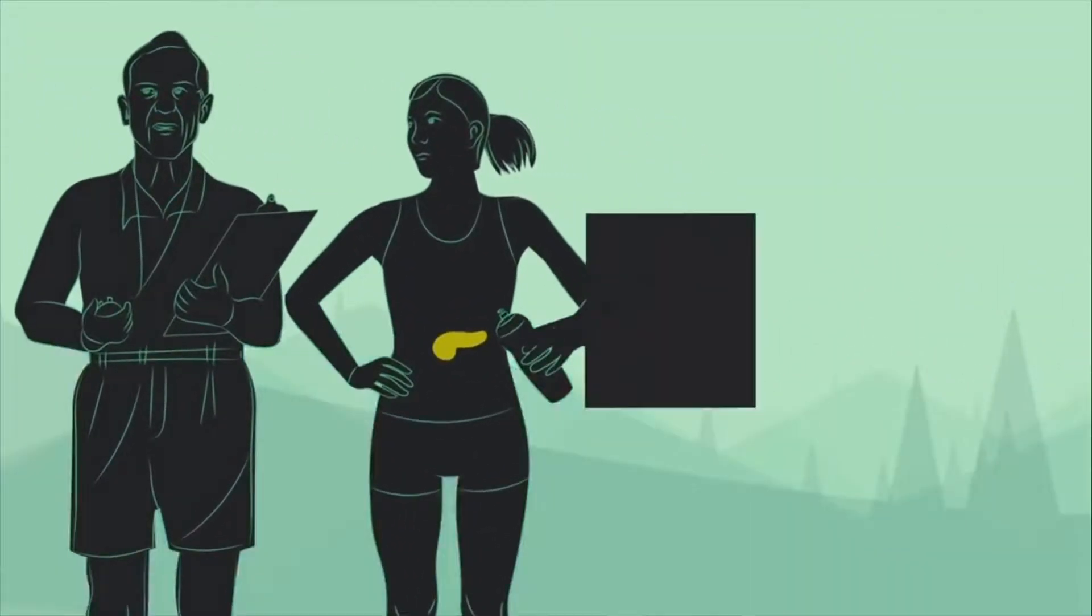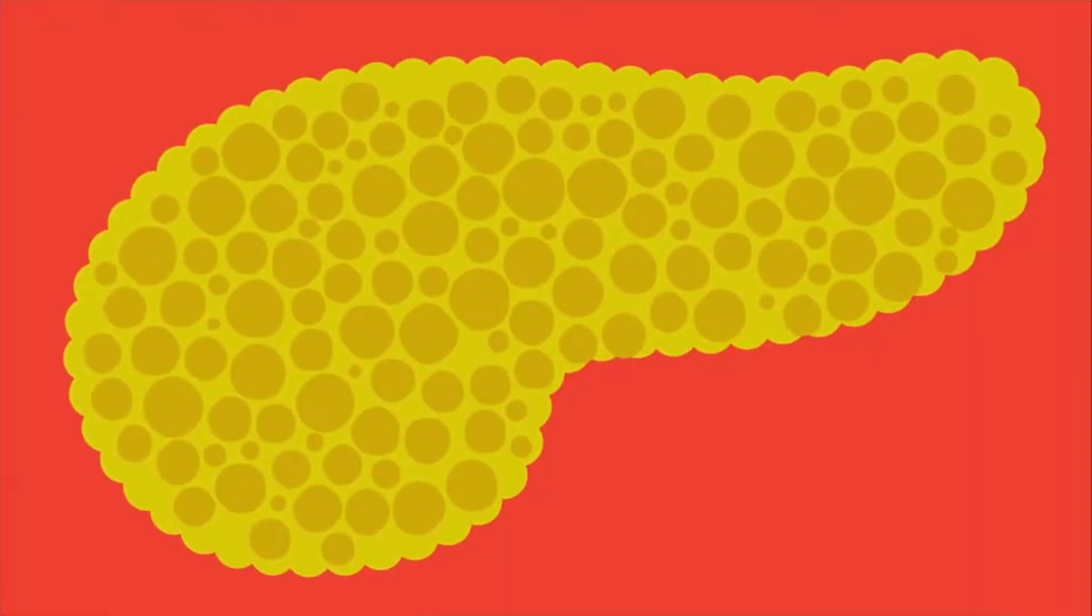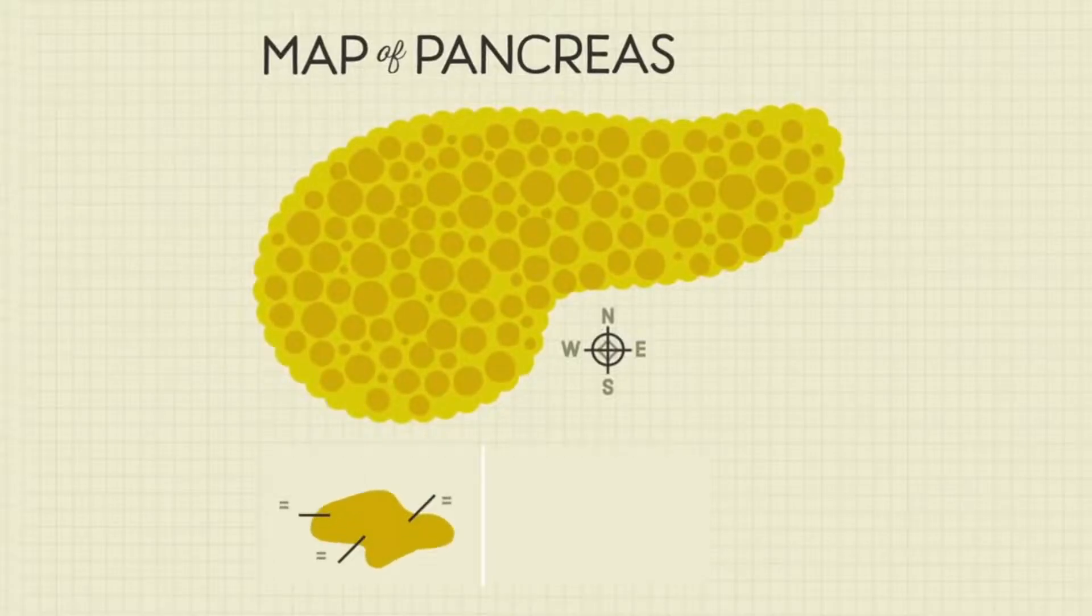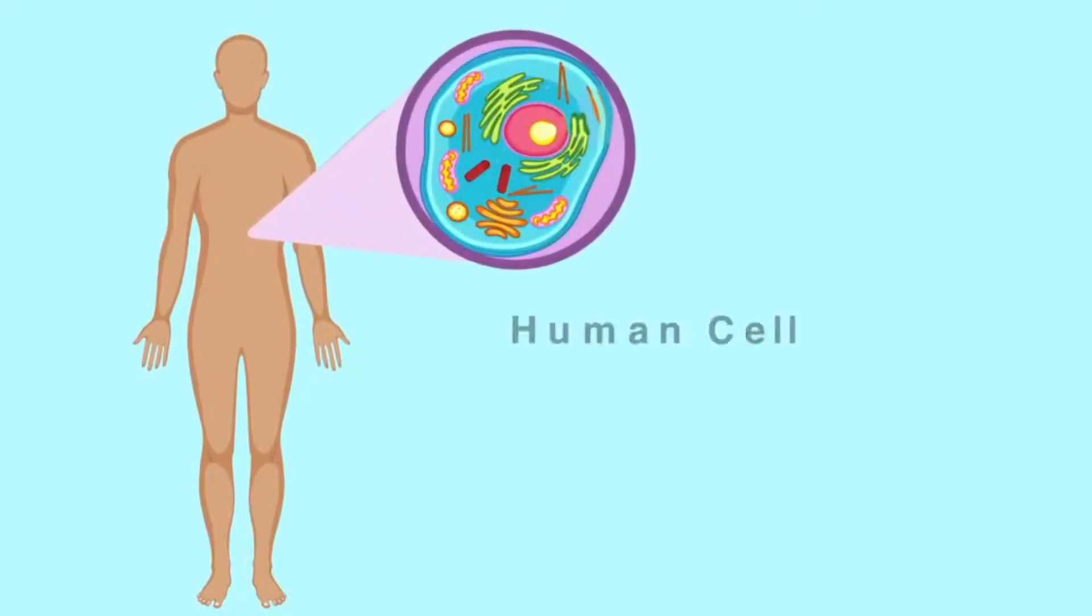Every human has an organ called a pancreas, located somewhere around here. This organ creates a hormone known as insulin. As many of you may be aware, the human being is composed of many smaller units called cells.